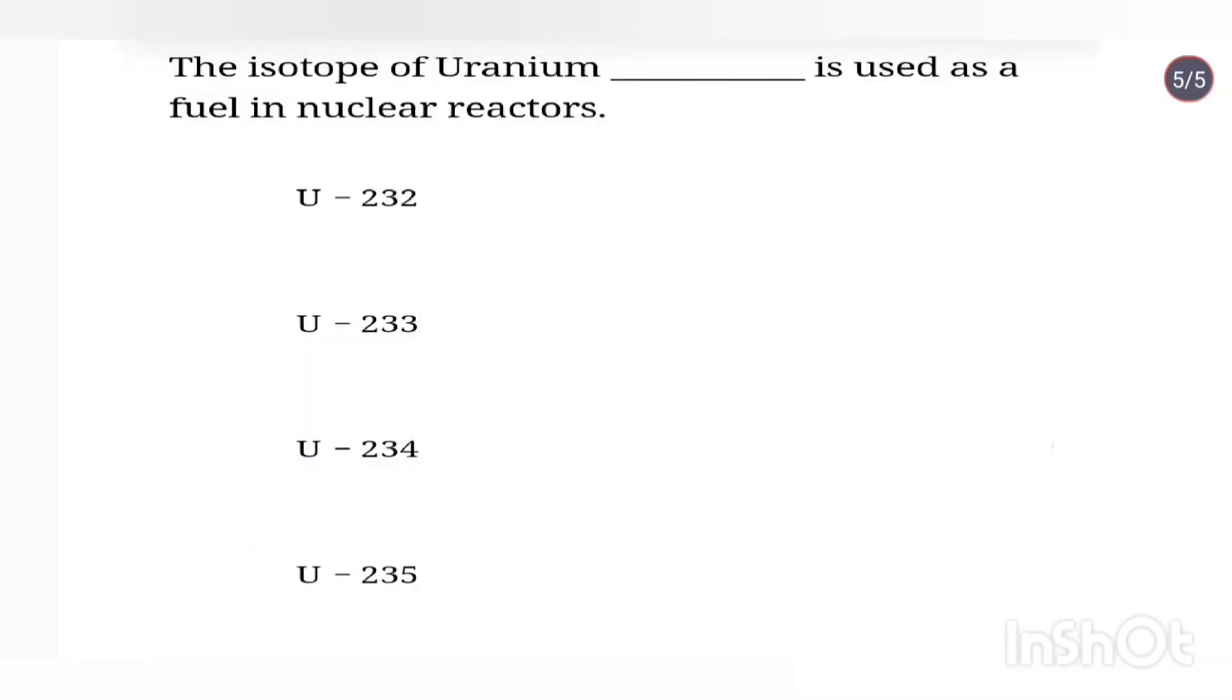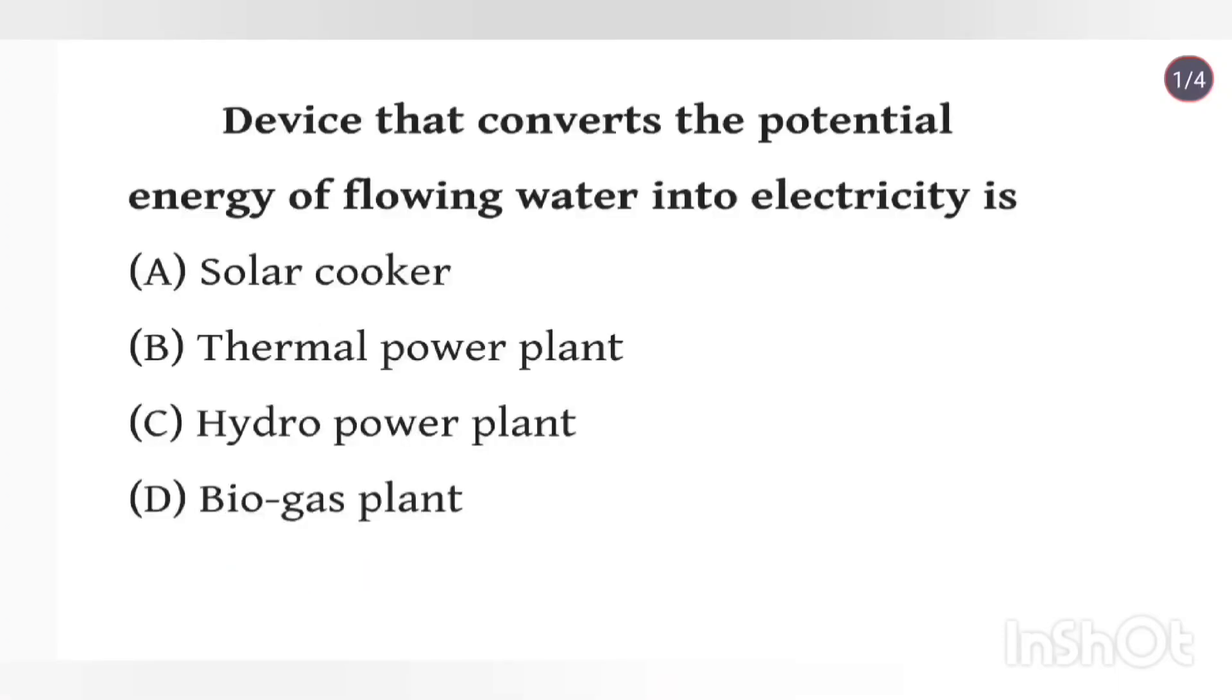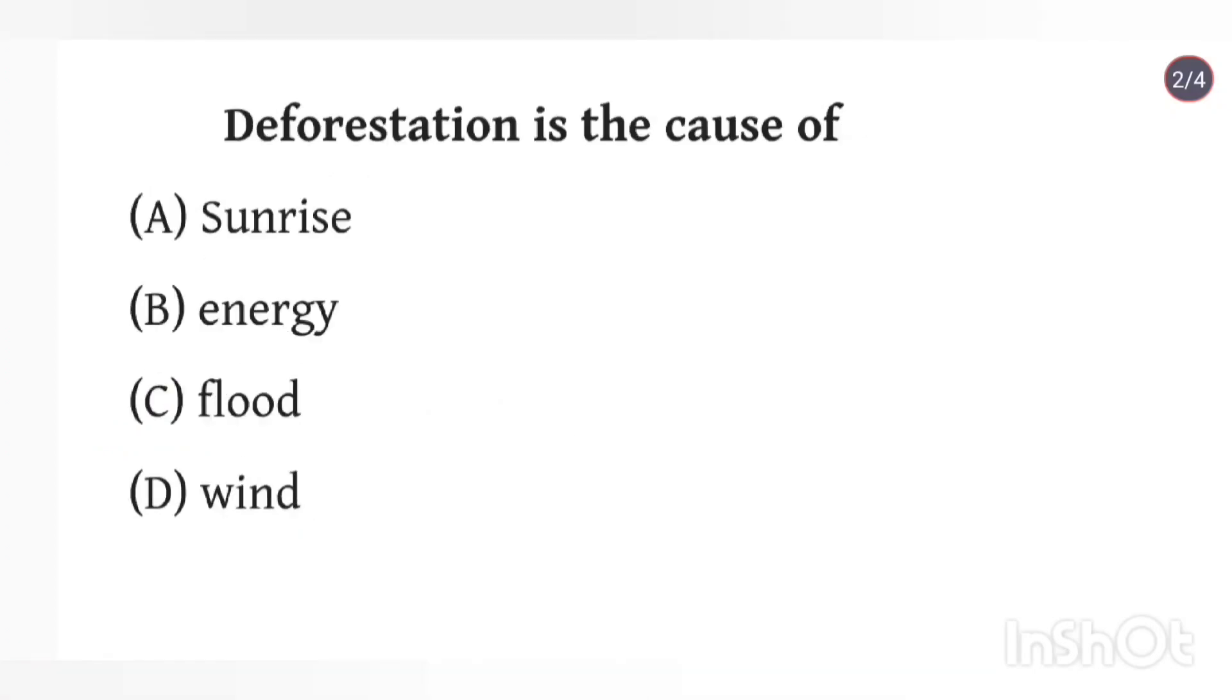The isotope of uranium used as fuel in nuclear reactors is uranium-235. The device that converts the potential energy of flowing water into electricity is a hydropower plant. Deforestation is the cause of floods.